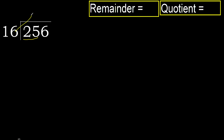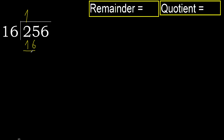16 multiplied by which number is nearest to 25 but not greater? 16 multiplied by 2 is 32, which is greater. 16 multiplied by 1 is 16. 16 is not greater. 25 minus 16 is 9.